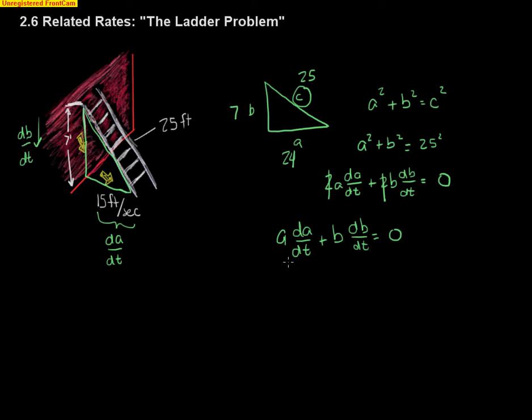So now, I should be able to plug in everything that I know. I know that a is 24, and I know that da dt, I also knew that. da dt, as was stated, that the ladder is falling away from the wall at 15 feet per second. So I got a 15 here. b, which was a height of 7, and then db dt was the rate I'm trying to solve for.